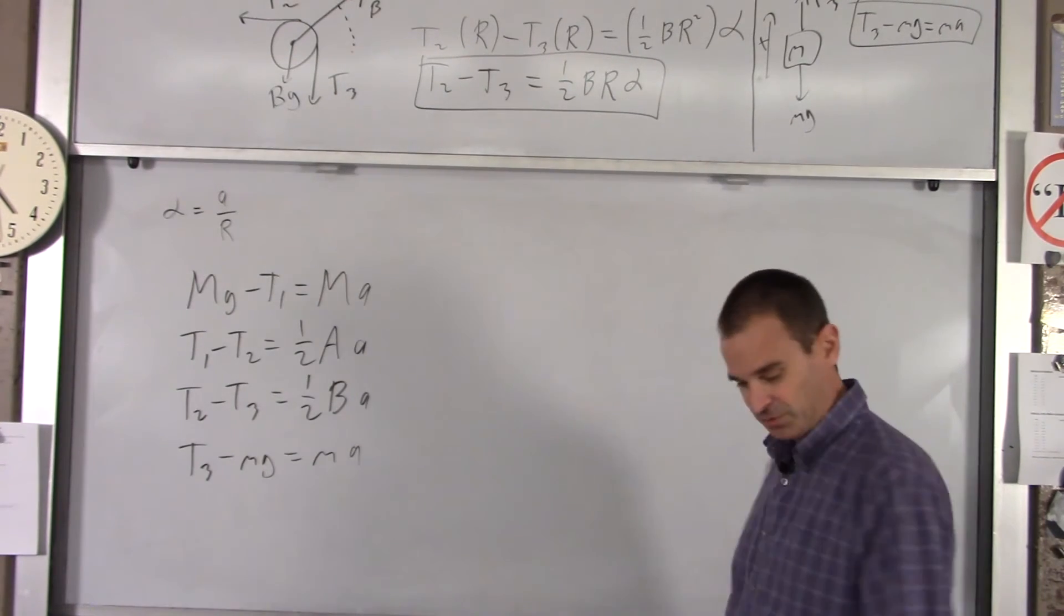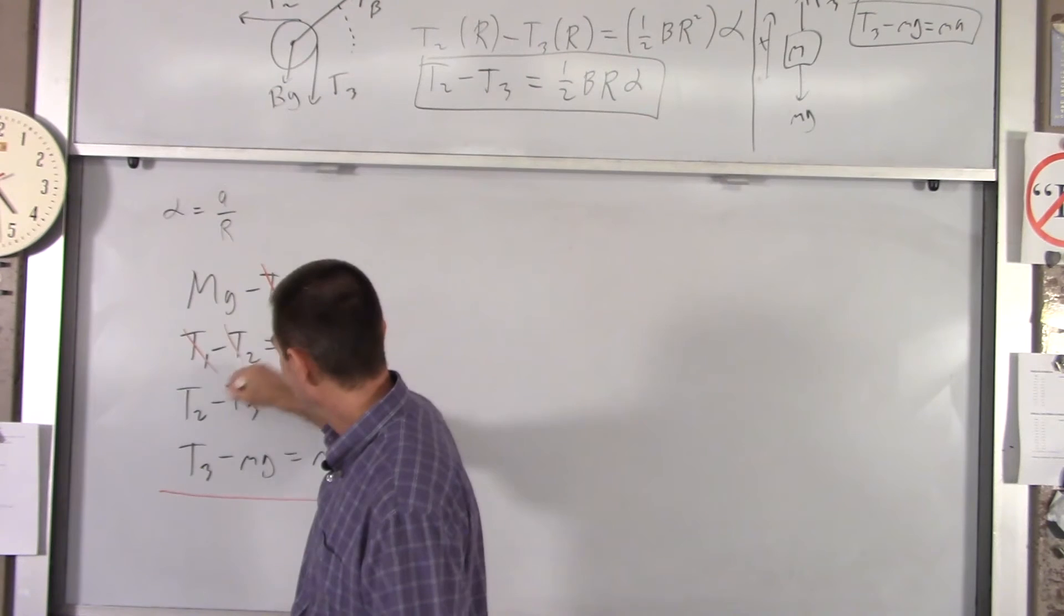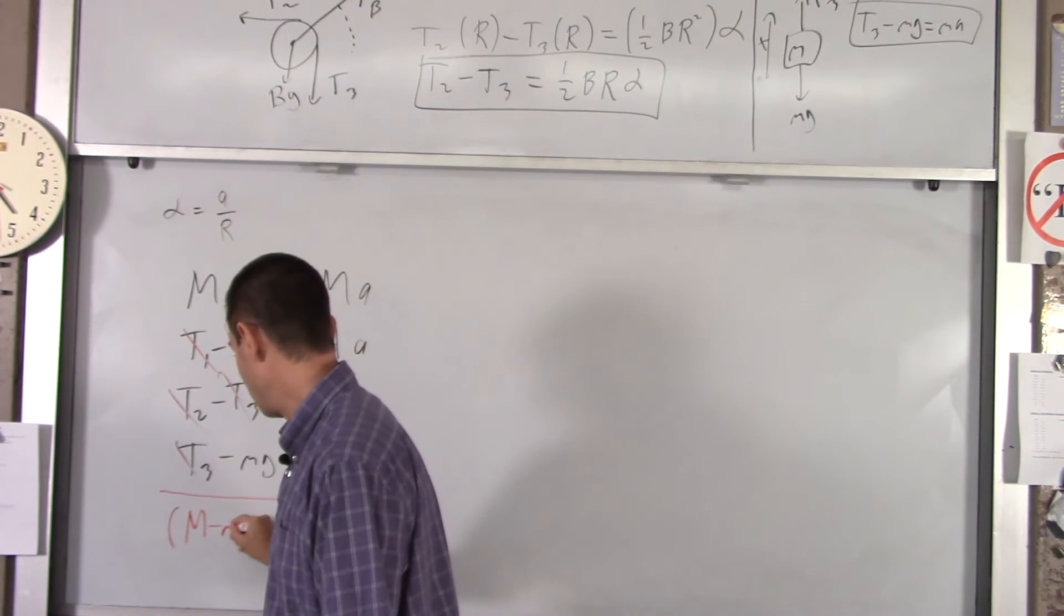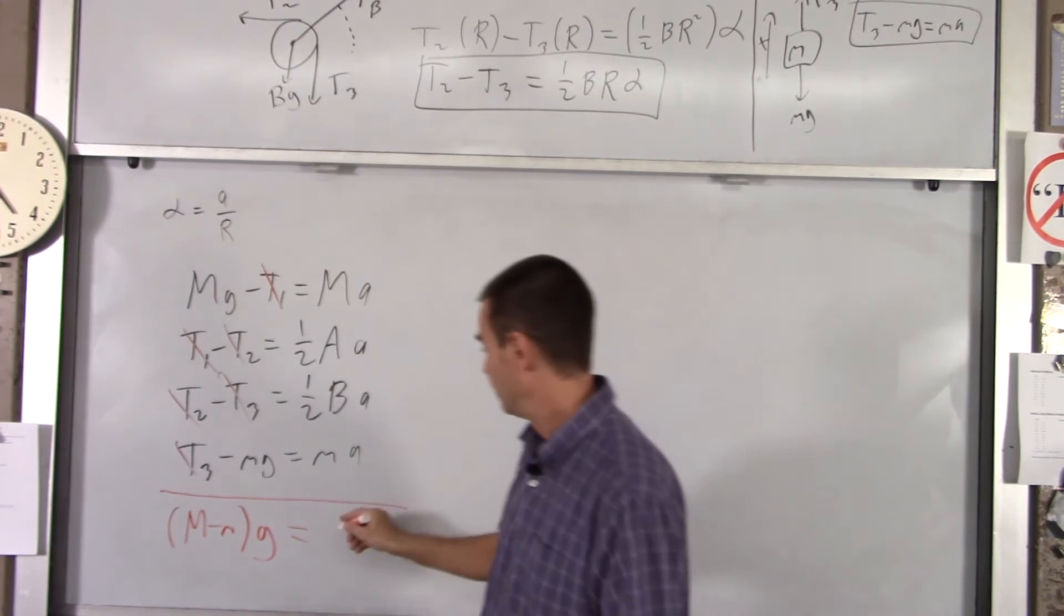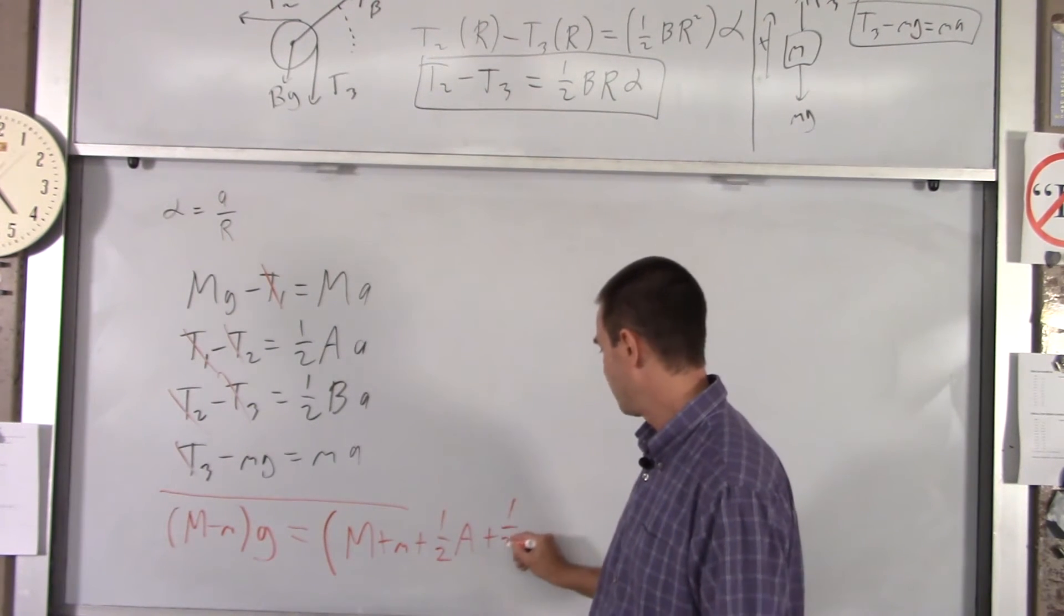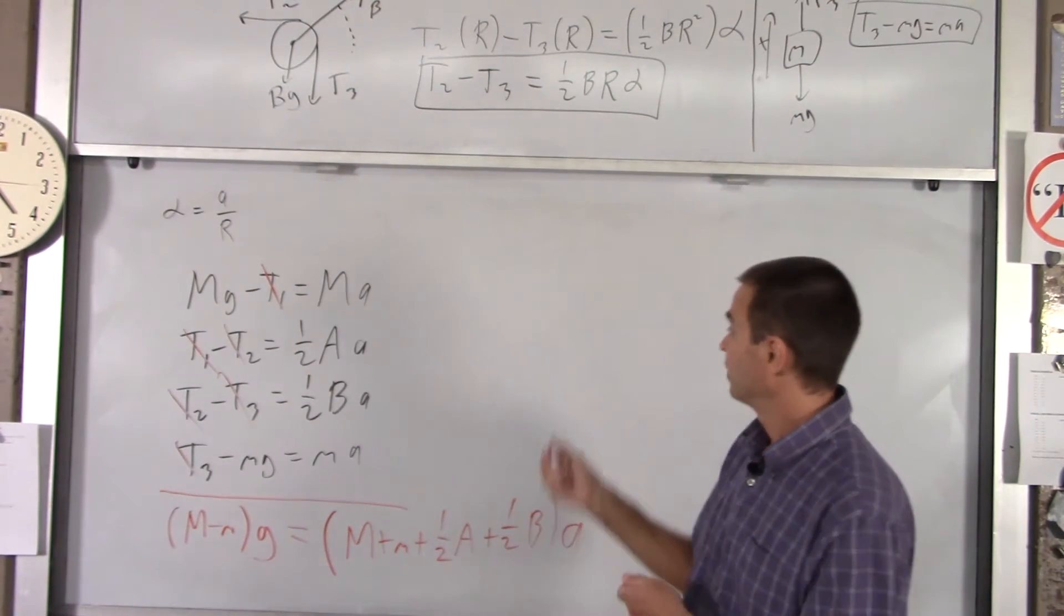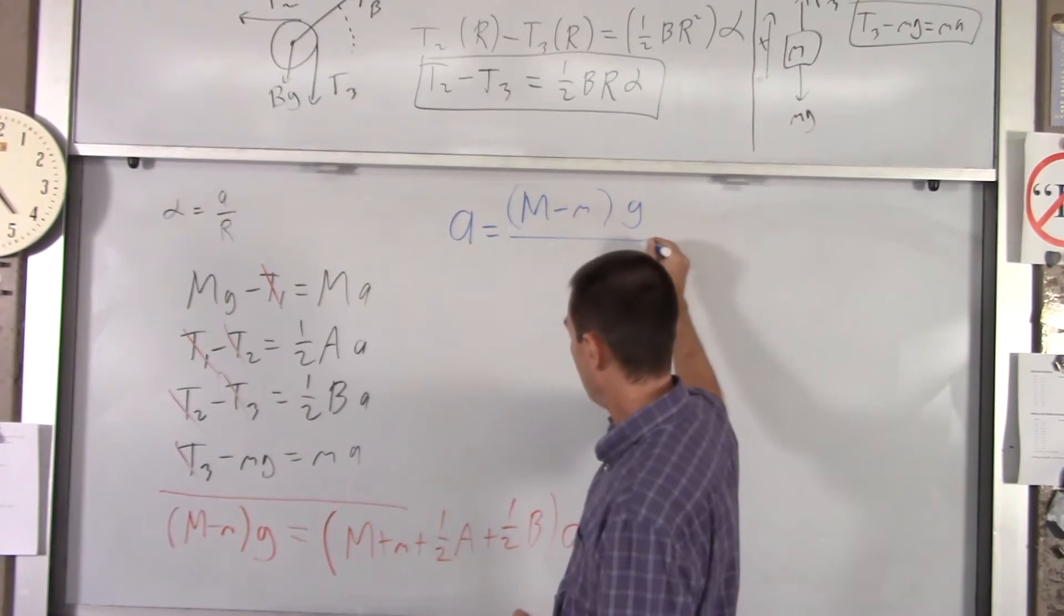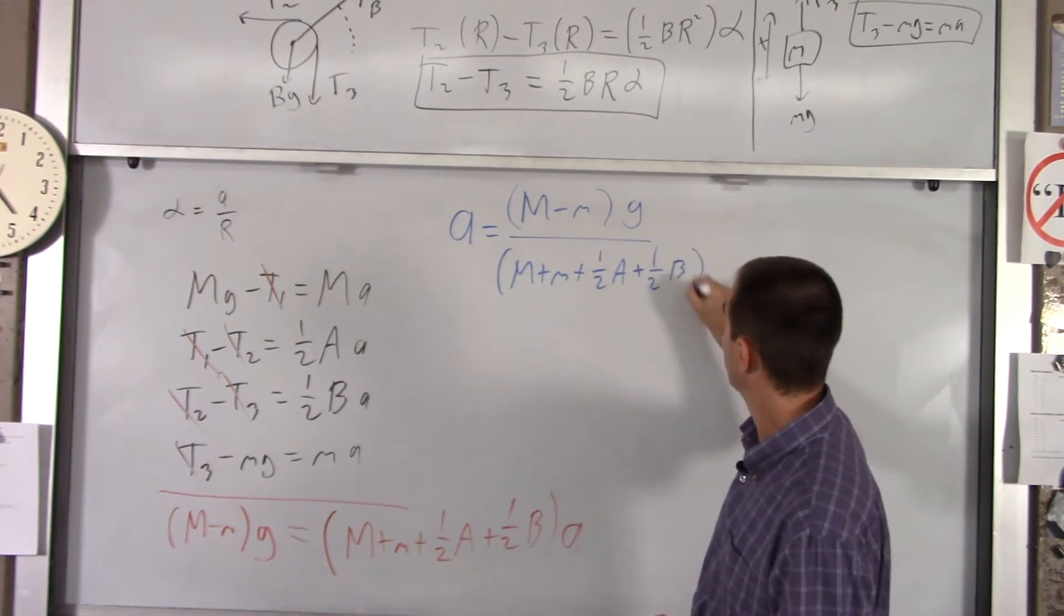If you look at those, the easy way to solve this is to just add your equations together. On the left side, if we add everything together, you get big Mg minus little mg. I'll factor out the g. So you get big M minus little m g equals big M plus little m plus half of each of those masses times A. So I'll factor all that out. You get big M plus little m plus one half of pulley A's mass plus one half of pulley B's mass times acceleration. If you divide everything by that, you've got your acceleration. So your acceleration will be big M minus little m g over big M plus little m plus one half of pulley A's mass plus one half of pulley B's mass.